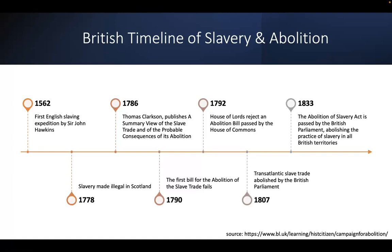The following information comes from the British Library's excellent website on the campaign for abolition. We can see on the timeline a trace of slavery and abolition from 1562 to 1833 concerning the British Empire in particular. The slavery trade in this context refers to the transatlantic trading patterns established in Europe and the west coast of Africa, with the first English slaving expedition by Sir John Hawkins in 1562 — showing a centuries-long practice.